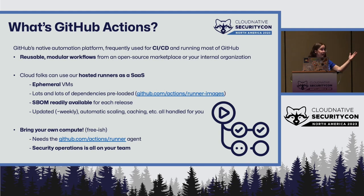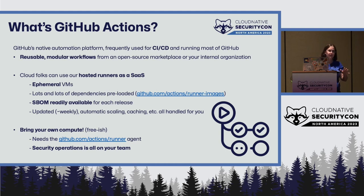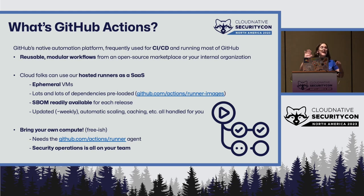You just say 'run on a Mac' and it does, or 'run on Ubuntu Latest' and it does magic for you. When you do this, you're getting an ephemeral virtual machine with a ton of stuff already preloaded. The Ubuntu Latest image clocks in at about 50 gigabytes — works well for a VM, but it's a little unwieldy for a container. You can get an SBOM readily available, updated weekly, scaled, magic — it's SaaS.